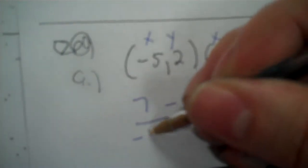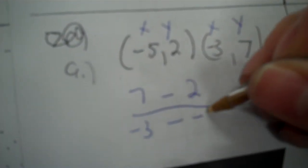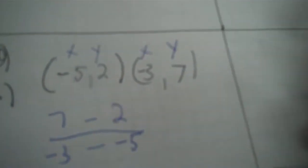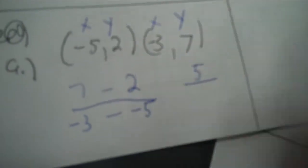And then in my last problem, 7, negative 3, and then 2, negative 5. So 7 minus 2 is 5. Negative 3 minus negative 5 is 2. So now I divide 5 by 2. And I've got a point, so I just leave it 5 over 2.